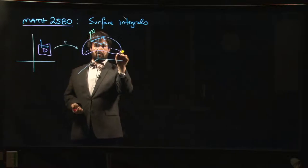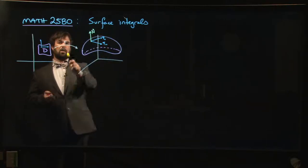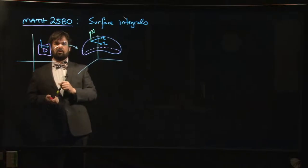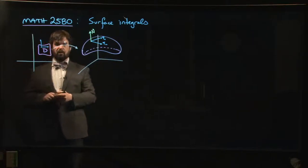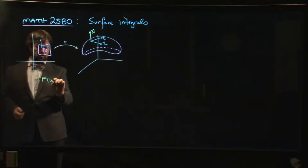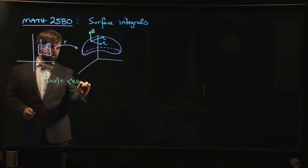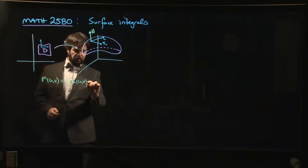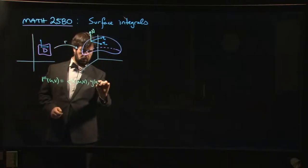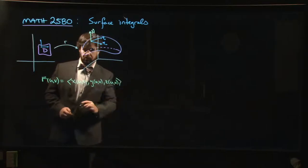You want to put some sort of grid system down. And so what you do is you come up with this vector-valued function R. It's going to be a function of two variables, R of u, v. And so what it's doing is it's defining x, y, and z as functions of u and v.